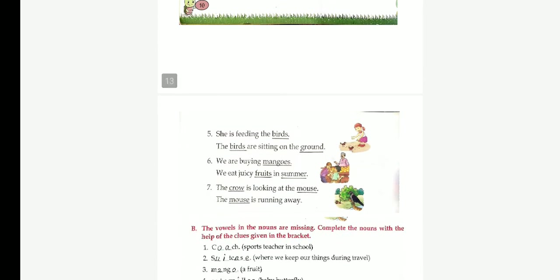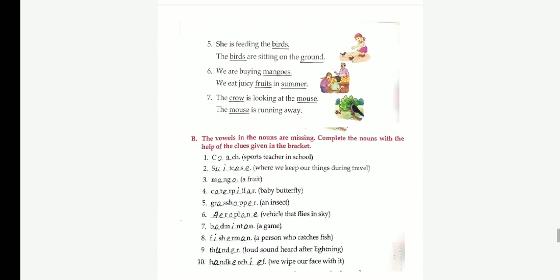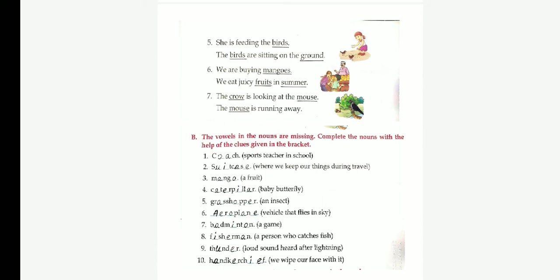Fifth one. She is feeding the birds. The birds are sitting on the ground. Birds and ground. Nouns. Sixth one. We are buying mangoes, we eat juicy fruits in summer. So, nouns: Mangoes, fruits and summer. Seventh one. The crow is looking at the mouse. The mouse is running away. Crow and mouse are nouns.